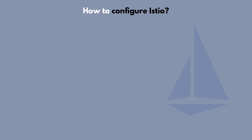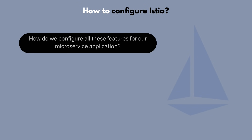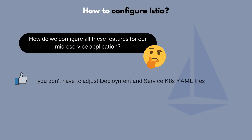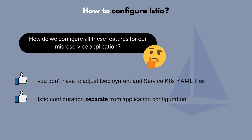So how do we configure all the above features for our microservices in Istio? You don't have to adjust deployment and service YAML files for your microservices — all the configuration for Istio components will be done in Istio itself, maintaining a clear separation between the application logic and configuration and the service mesh logic and configuration.